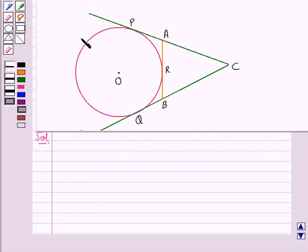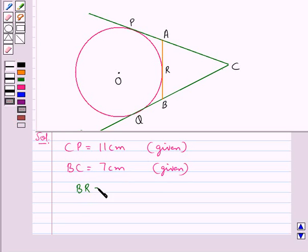Consider this figure in which we have CP and CQ are tangents to a circle with center O. Then ARB is also a tangent to the circle which touches the circle at point R. We are given CP is equal to 11 cm, BC is equal to 7 cm, and we need to find the length of BR.